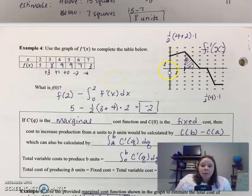So we used, we found the area of this trapezoid here. So that's what this is. See the trapezoid formula? So five minus this area gives us negative two.